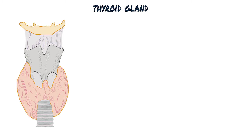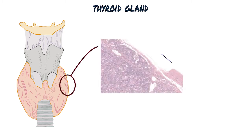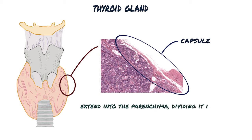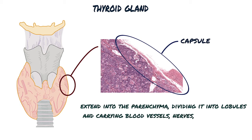The thyroid gland is covered by a fibrous capsule, from which septa extend into the parenchyma, dividing it into lobules and carrying blood vessels, nerves, and lymphatics.